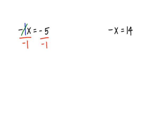So negative 1 divided by negative 1, that would leave me with 1x, and negative 5 divided by negative 1 would leave me with positive 5. And the reason it's positive is that two negatives when divided make a positive result.